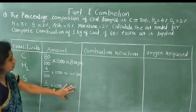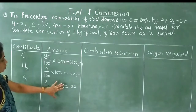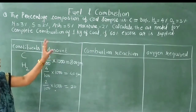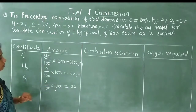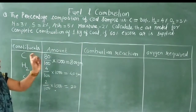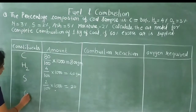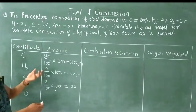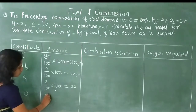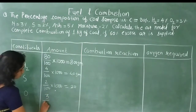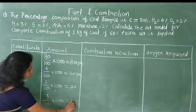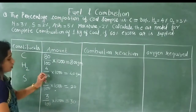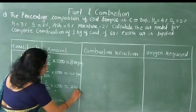The other non-combustible constituents are excluded. For the oxygen already present in coal: 3%, so (3/100) × 1000 = 30 g. So all amounts in grams have been calculated — these are the amounts participating in combustion.